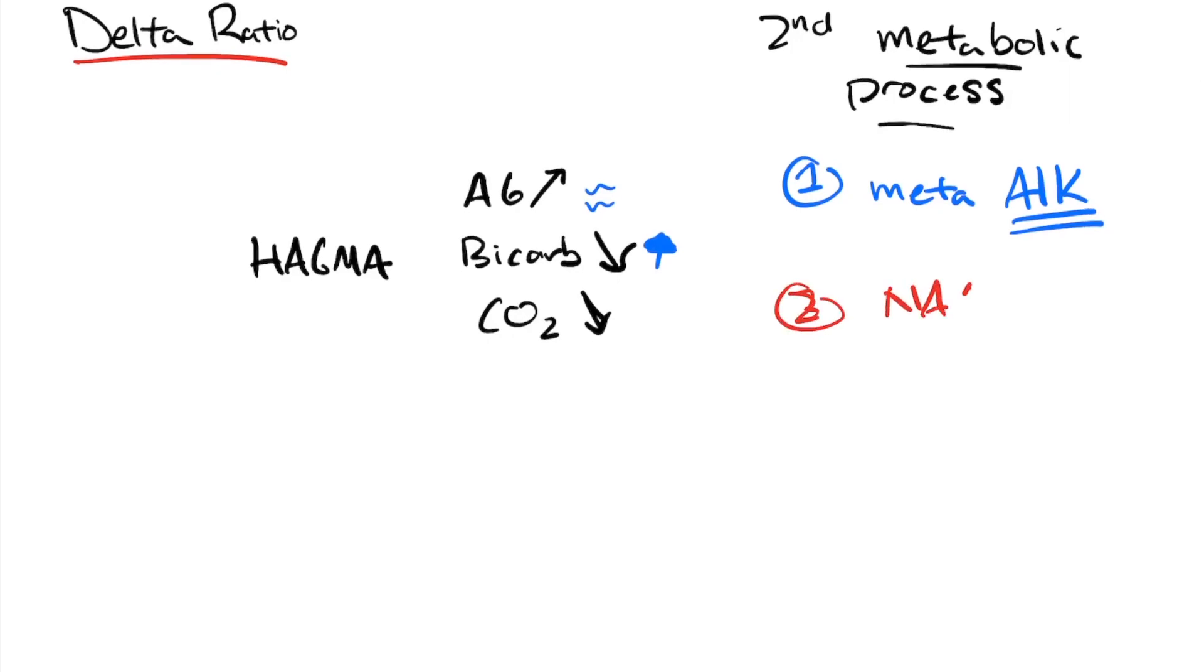The second type of secondary metabolic process is going to be a NAGMA, or a non-anion gap metabolic acidosis. In this process, because it's a non-anion gap process, our anion gap also stays about the same, but now our bicarb is going to be even lower.